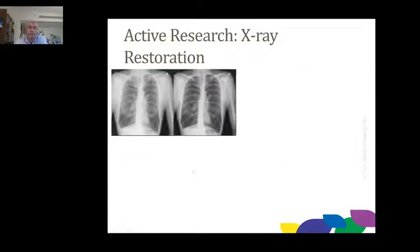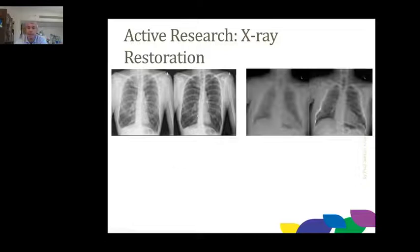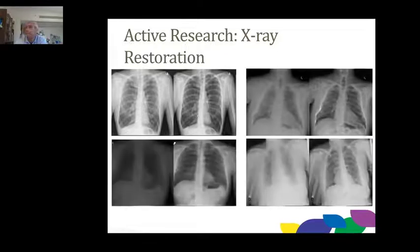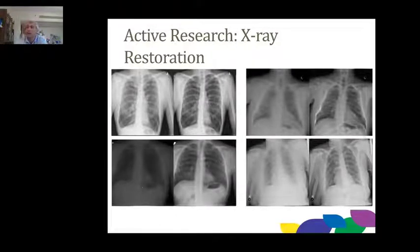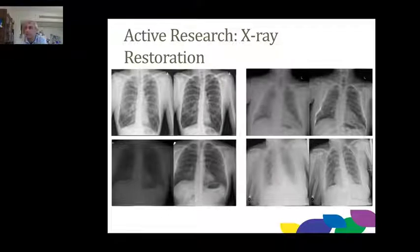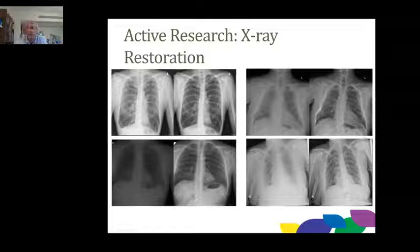Problems with X-rays include blurring, shading, saturation — darkish X-rays where you cannot see details well — as well as whitish, over-saturated X-rays. From any of these distorted X-rays, we can create and restore a good-quality X-ray.